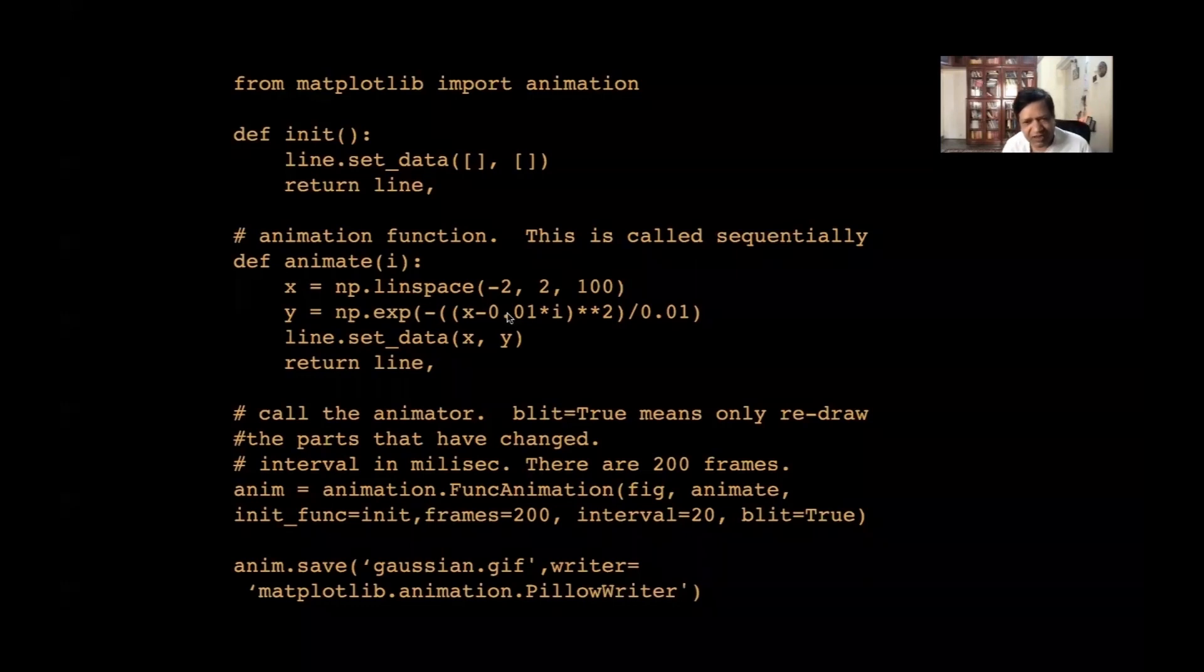So, it is going to be b squared is 0.01. Okay. And i is like time. Okay.